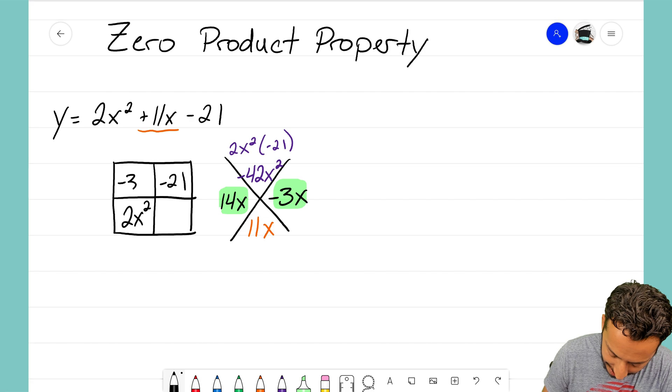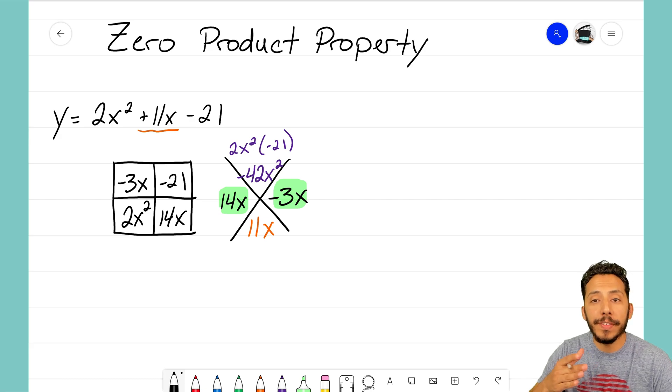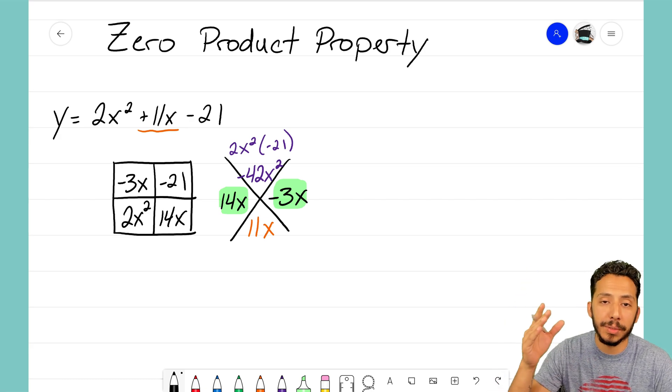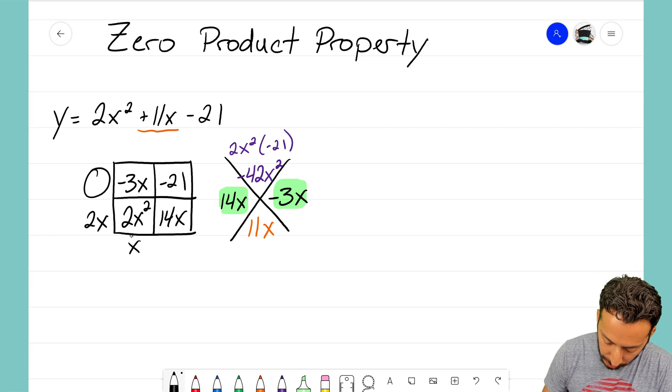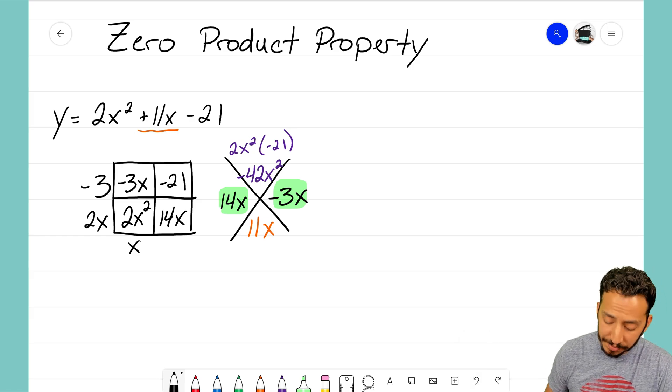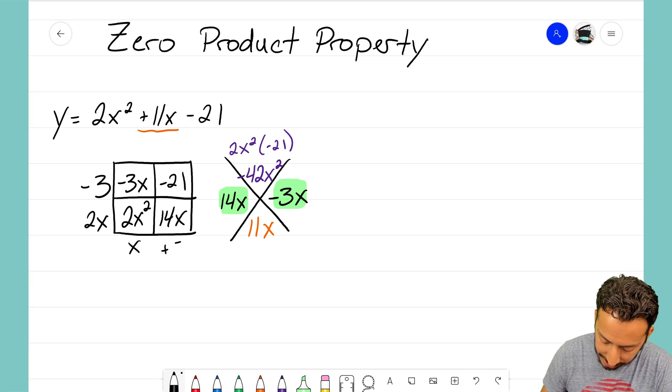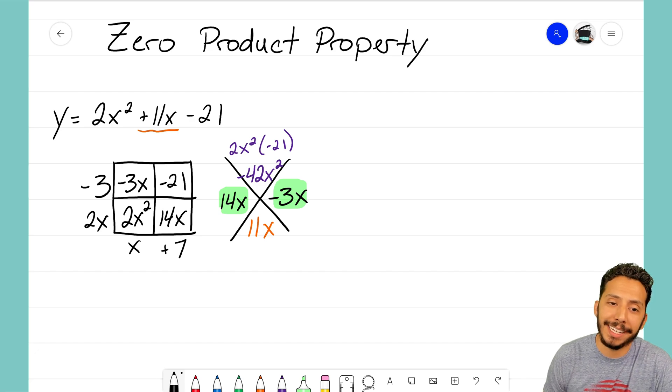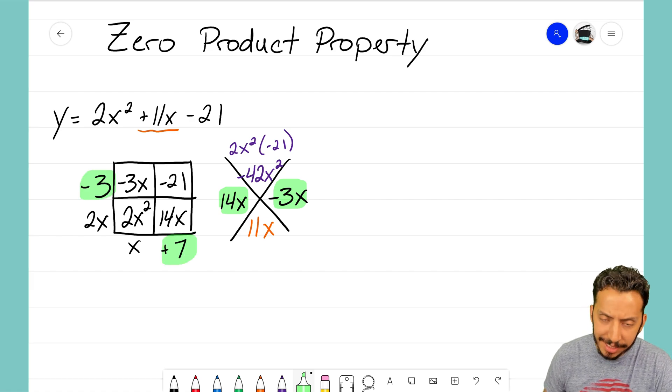So I'm going to throw those in: negative 3x, 14x. And now I want to start to figure out what are the sides of that generic rectangle. Well, in order to make 2x squared, I know that I'm going to need 2x and x. And thinking about what multiplies to x to make negative 3x, I think I'm going to put a negative 3 there. And 2x times something is going to give me 14x. Well, 2x times positive 7 will give me 14x. And again, if you're kind of not sure if those two numbers are correct, double check: negative 3 times 7 does give us negative 21.